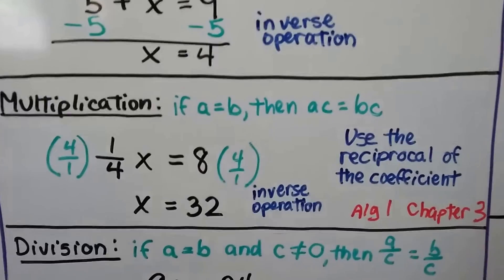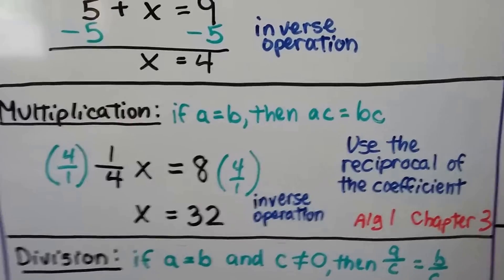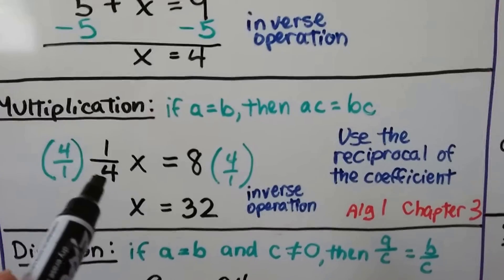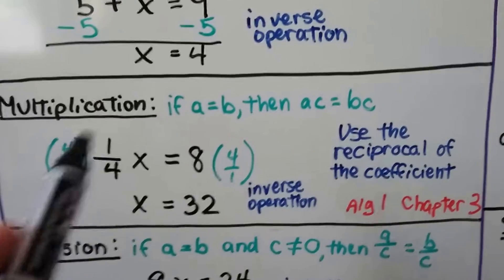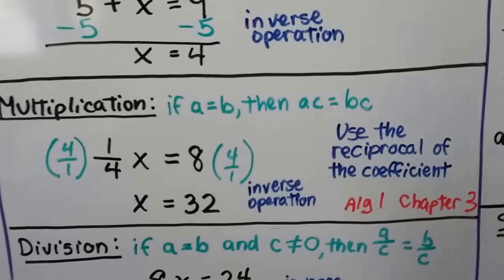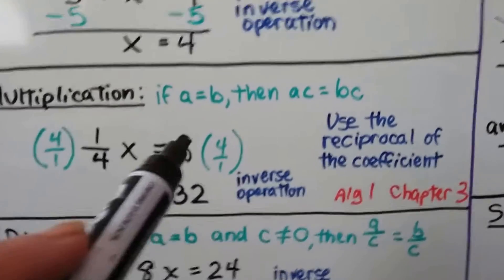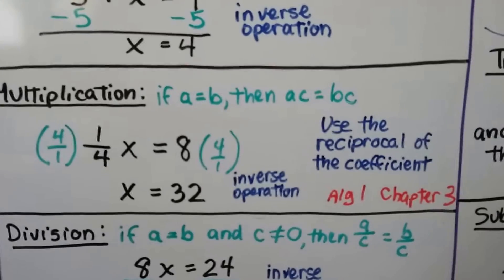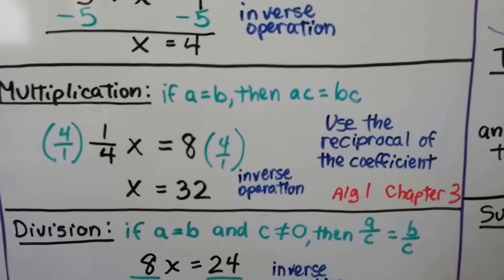For the multiplication property of equality, if A equals B, then A times C equals B times C. When we have one-fourth X equals 8, we use the reciprocal of one-fourth, which is 4 over 1, and multiply both sides. Four over 1 times one-fourth is 4 over 4, giving us 1X, and 4 times 8 gives us 32. So X equals 32.